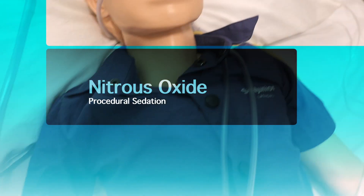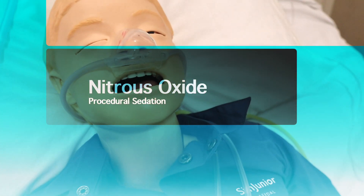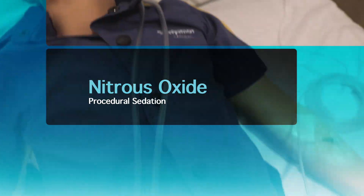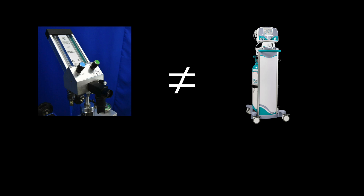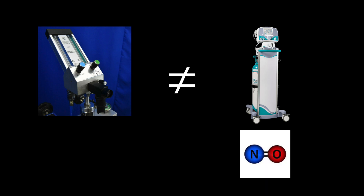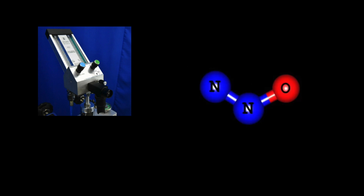This video is going to go over the basics behind inhaled nitrous oxide therapy for procedural sedation. It's important not to confuse nitrous oxide with nitric oxide, chemical formula NO — which was covered in a previous video on nitric oxide therapy for pulmonary vasodilation in refractory hypoxemic respiratory failure. This video covers nitrous oxide with the chemical formula N2O.